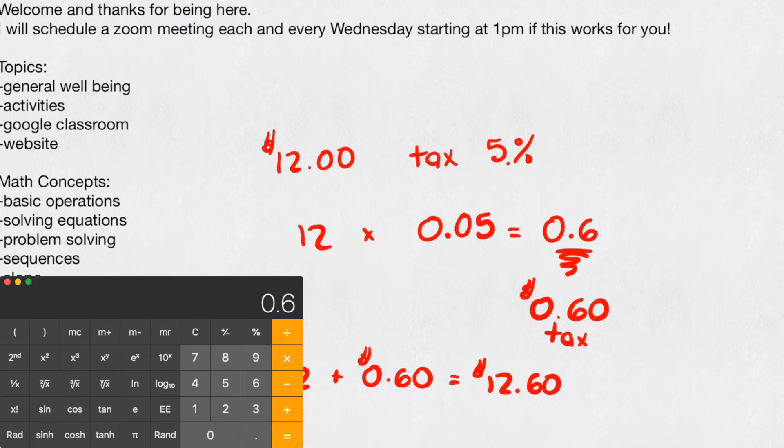Now, if this was a discount, instead of 5% tax, maybe it was a discount of 5%. Maybe you're getting a sale today. Then what you do is, instead of adding this number, the $0.60 back in, you would subtract it. And so that would be the only difference between a discount and a tax.